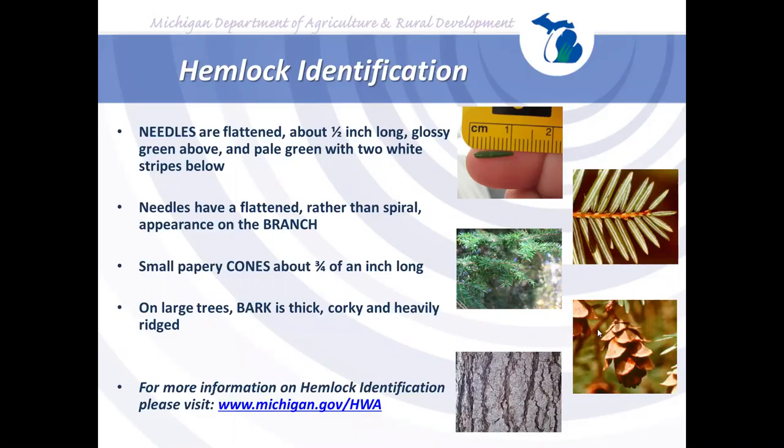Hemlock is fairly easy to identify once you've seen it. Needles are very short compared to balsam fir, flattened, and arranged in a flat spray rather than spirally like spruce. Cones are very small, and the bark on large trees is very distinctive. For more information on hemlock identification, visit michigan.gov/hwa, where MDARD houses all current HWA information.